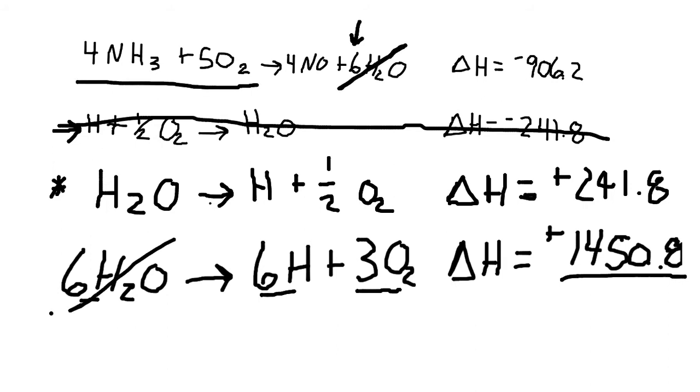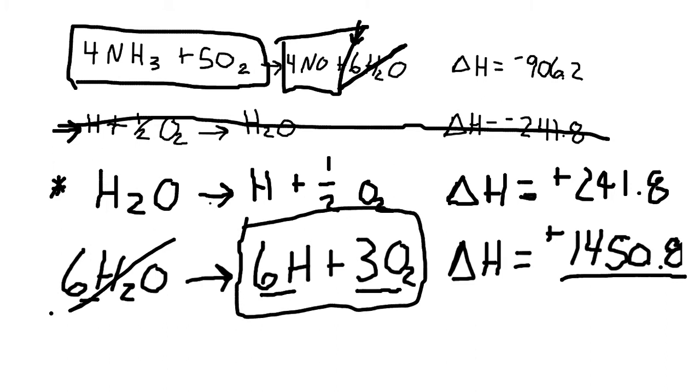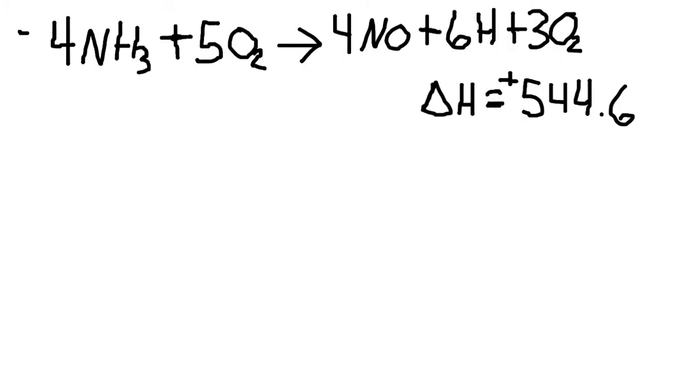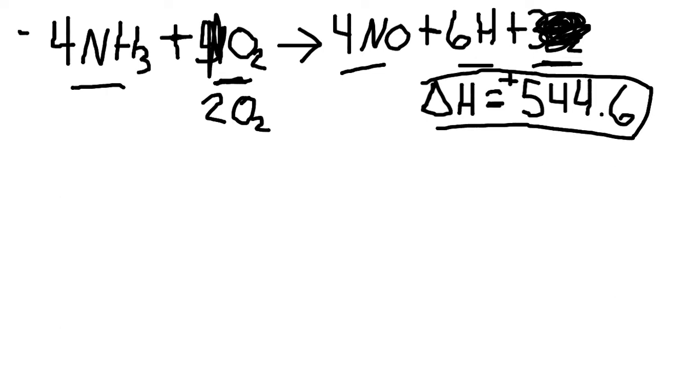So I'll have this on the reactant side. And I'll have the 4NO and the 6H and 3O2 on the yielding side. And then I add these two numbers together to get the delta H of that reaction. So now I have the formula 4NH3 plus 5O2 yields 4NO plus 6H plus 3O2. Now you notice I have 5O2 on this side and 3O2 on this side. That means I can simply cancel this out, subtract it off, and make this a 2. And when I add my enthalpy changes together, what I end up getting is a positive 544.6.